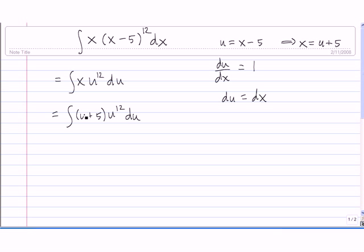Now we distribute this u to the 12th into the u plus 5. u times u to the 12th is u to the 13th, 5 times u to the 12th.